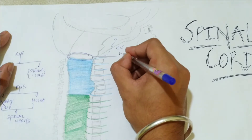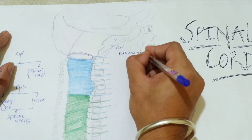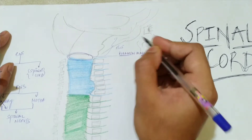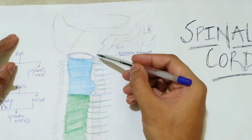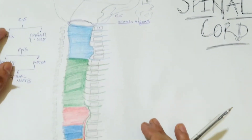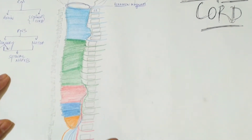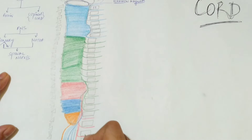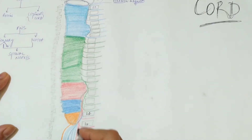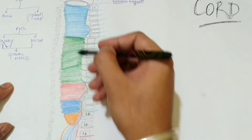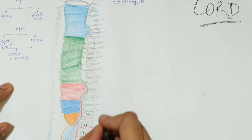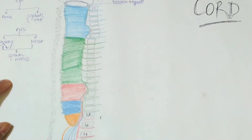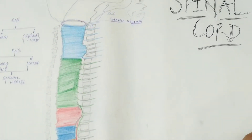The origination point of the spinal cord is C1 — the first cervical vertebra. It ends between L1 and L2 vertebra. So the spinal cord is located from the level of C1 above, and ends at the level of L1 or L2.